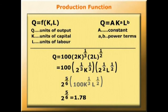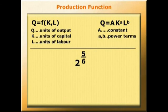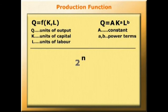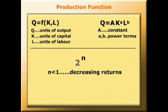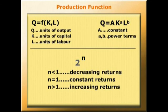If we had constant returns to scale, doubling the inputs would double the output. But it's less than 2, so we've got decreasing returns to scale. Generalizing that, determining whether we get increasing, decreasing, or constant returns to scale is determined by the power term n. If n is less than 1, as in our example, we have decreasing returns. If n equals 1, we have constant returns to scale. If n is greater than 1, we have increasing returns to scale.